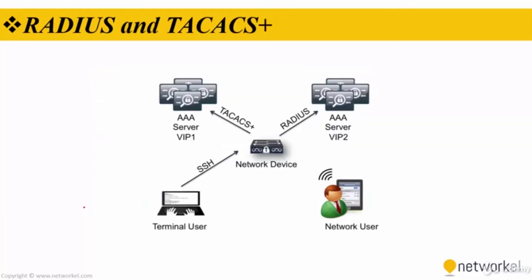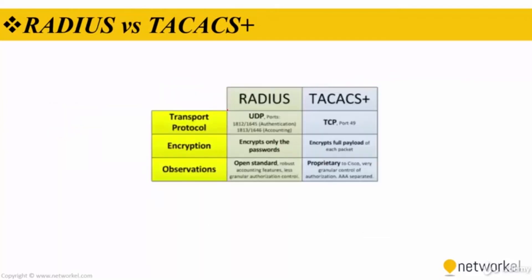Let's talk about RADIUS and TACACS+. Both are AAA protocols. For example, the terminal user sends an access request to the network device, and the network access device exchanges this request with the AAA servers using RADIUS or TACACS+ messages, as you can see in the figure. If authorization succeeds, the user is granted access to the device; otherwise, access is denied.